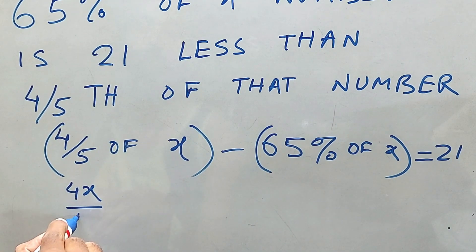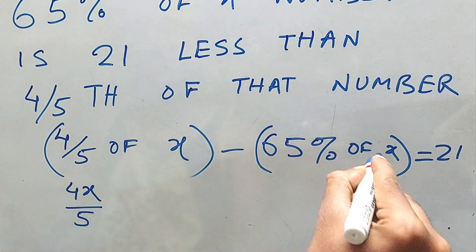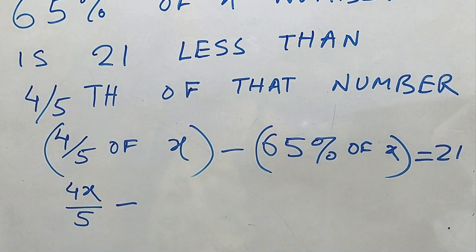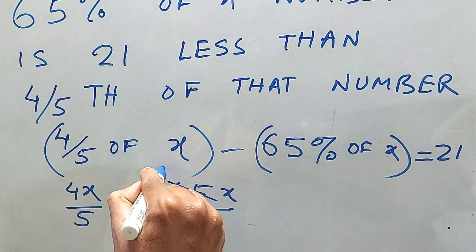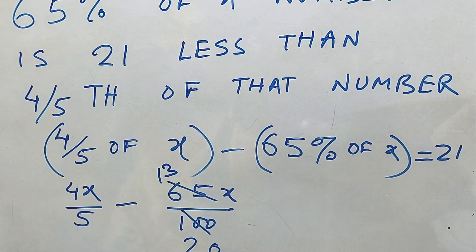Four-fifths of x means 4x by 5, and minus 65 percent of x means 65x by 100. Now if you divide both 65 and 100 by 5, we'll get 13x by 20, equal to 21.